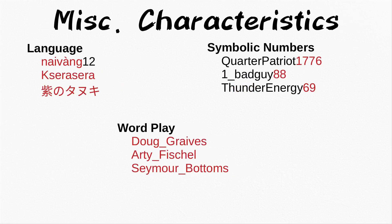I also take note of any language markers that might appear in a username. These can be tricky, as simply using a username in another language doesn't necessarily mean your target is fluent in that language. This is especially true with more common phrases, such as "que sera sera," that are widely known outside of the native language the phrase originates from. At this stage, I usually just note down the language and try to verify it later by looking for posts from my target in the same language.